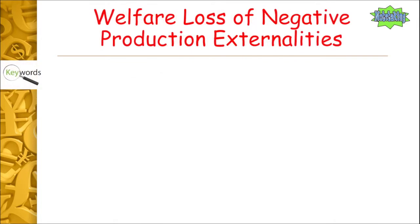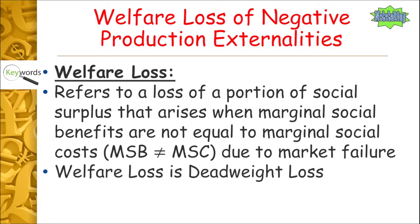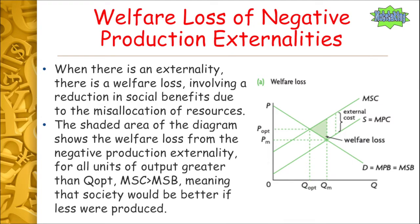Now let's look at the idea of welfare loss with negative production externalities. Welfare loss is the loss of a portion of social surplus that arises when marginal social benefits are not equal to marginal social costs due to market failure — also known as deadweight loss. When there's an externality, there's a welfare loss involving a reduction in social benefits due to the misallocation of resources. The shaded area of the diagram shows the welfare loss for all units of output greater than Qopt.